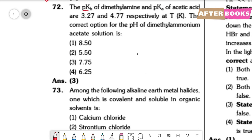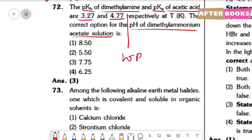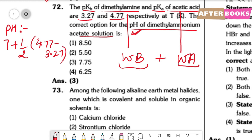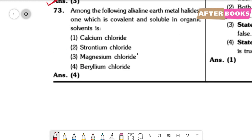Question number 72. pKb of dimethylamine = 3.27 and pKa of acetic acid = 4.77. We need the pH of dimethylammonium acetate solution (salt of weak acid and weak base). pH = 7 + ½(pKa − pKb) = 7 + ½(4.77 − 3.27) = approximately 7.75, which is option 3.